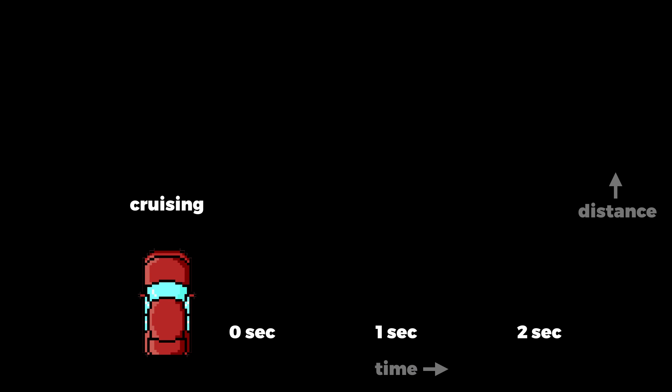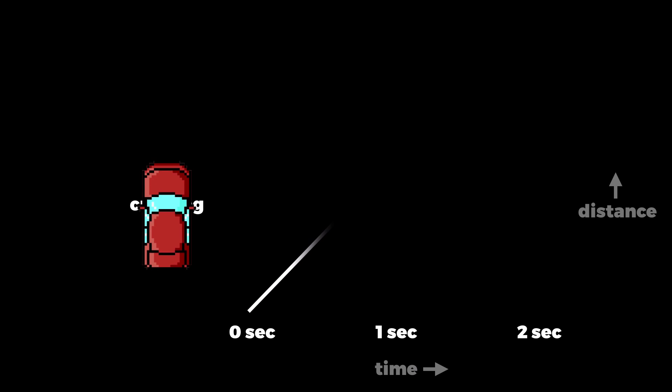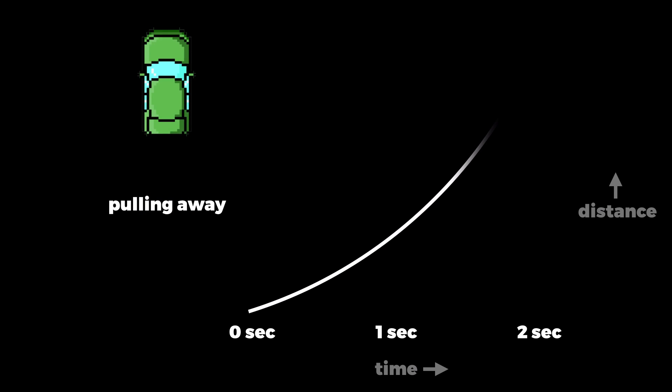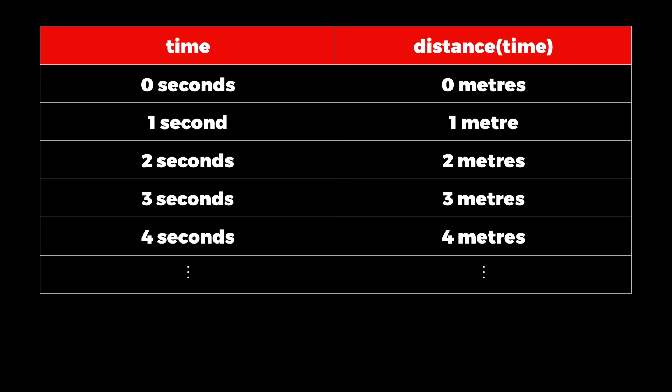If we plot time horizontally and distance vertically, the function of the red car's distance over time looks like this, a straight line. And the green car's function looks like this, a curve. If we periodically measure the red car's distance, we can get a sense of how it relates to the current time.